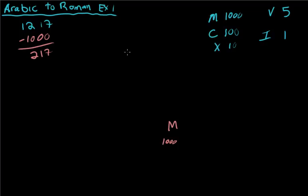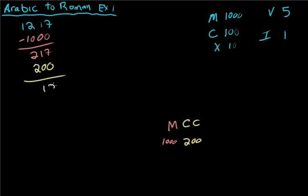So I need 217 more. I'll take 200 out of that, which would be equal to two C's. So 217 minus 200 is just 17.